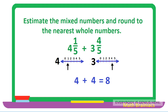For example: in the first fraction the numerator is much smaller than the denominator, so we round it down to 0 — accordingly 4 plus 0 gives us 4. In the second fraction the numerator is as large as the denominator, so we round it up to 1 — accordingly 3 plus 1 gives us 4. Therefore, the estimated sum of the mixed numbers is 4 plus 4, which equals 8. It is easy, right!